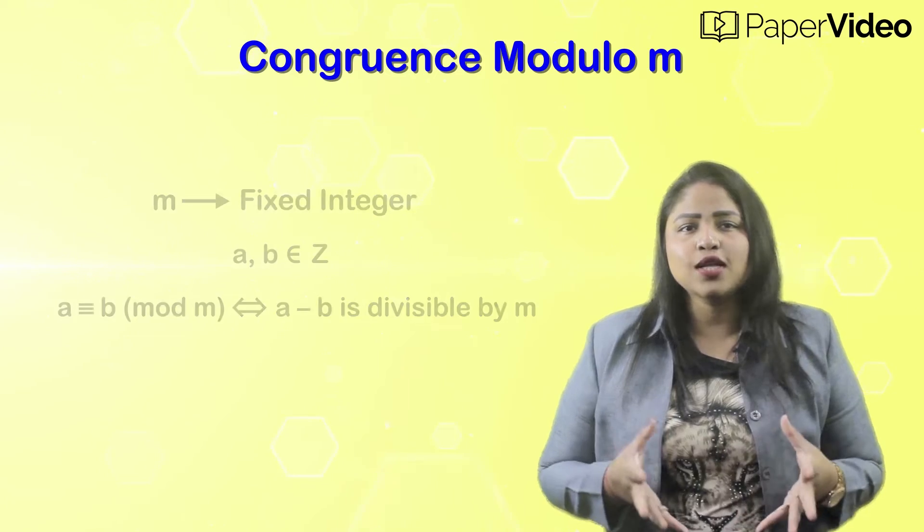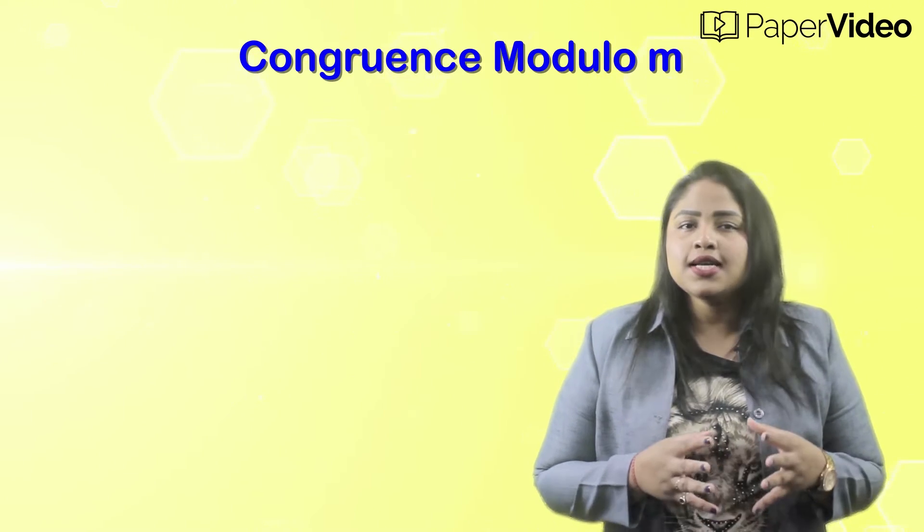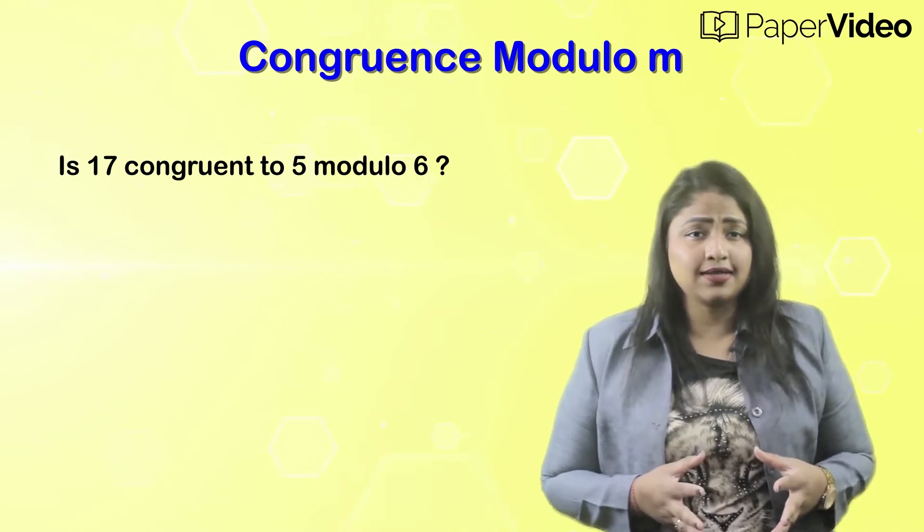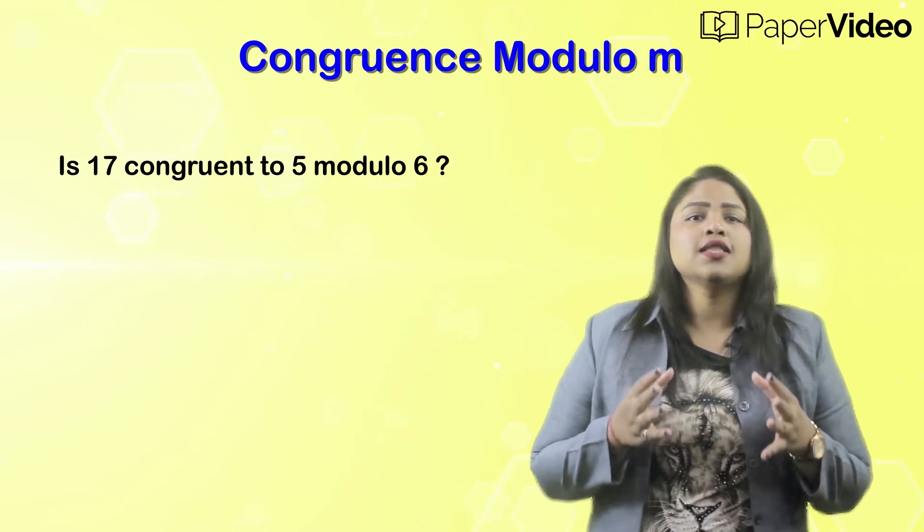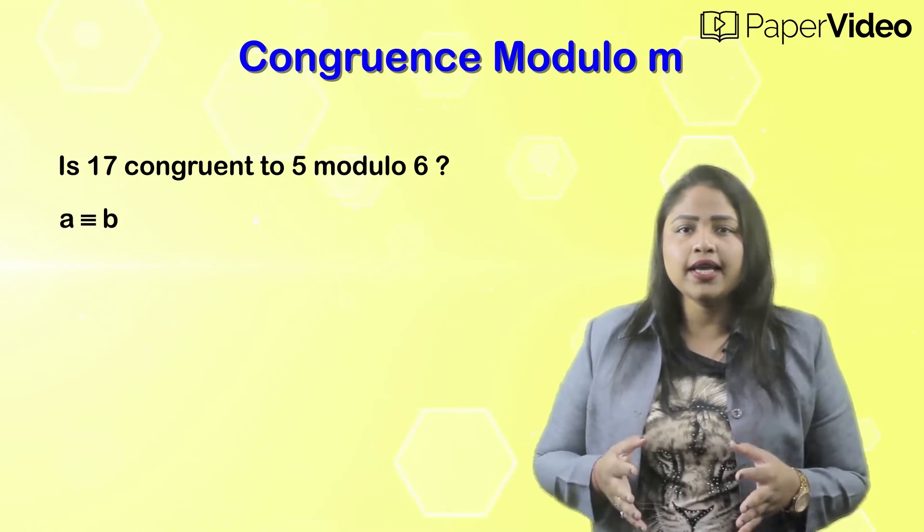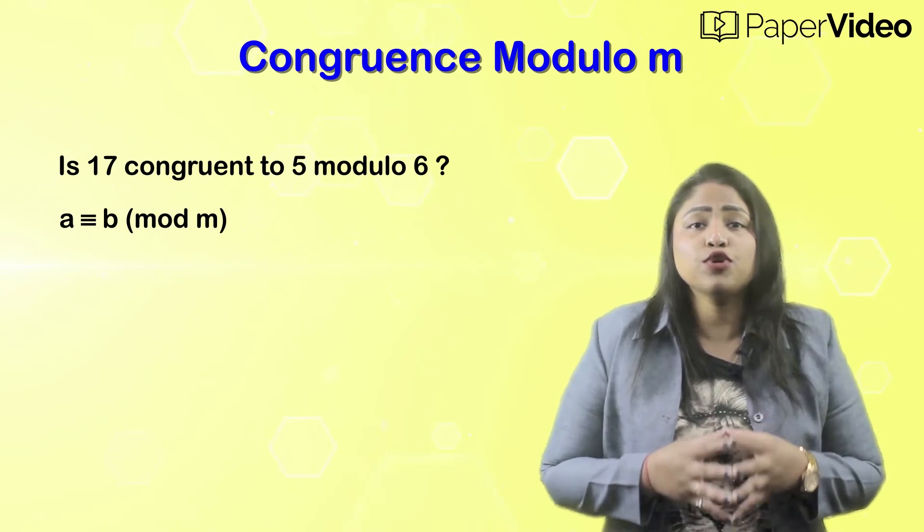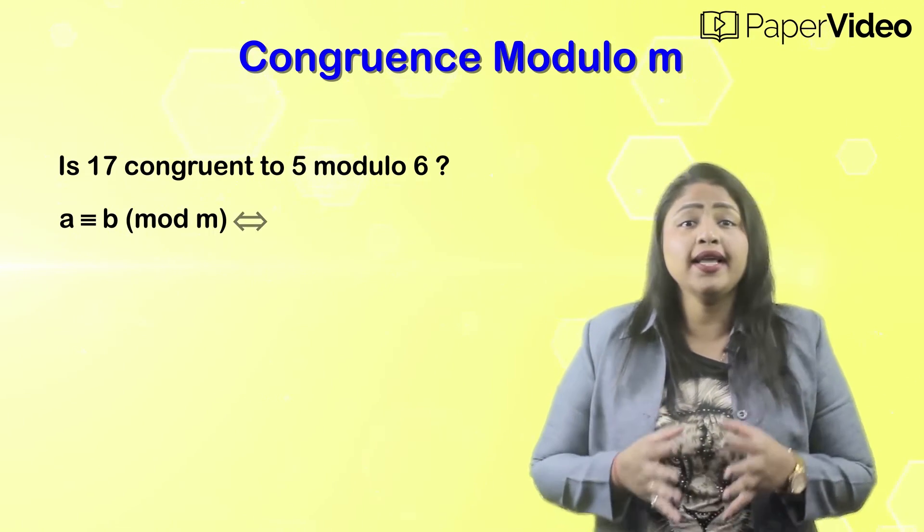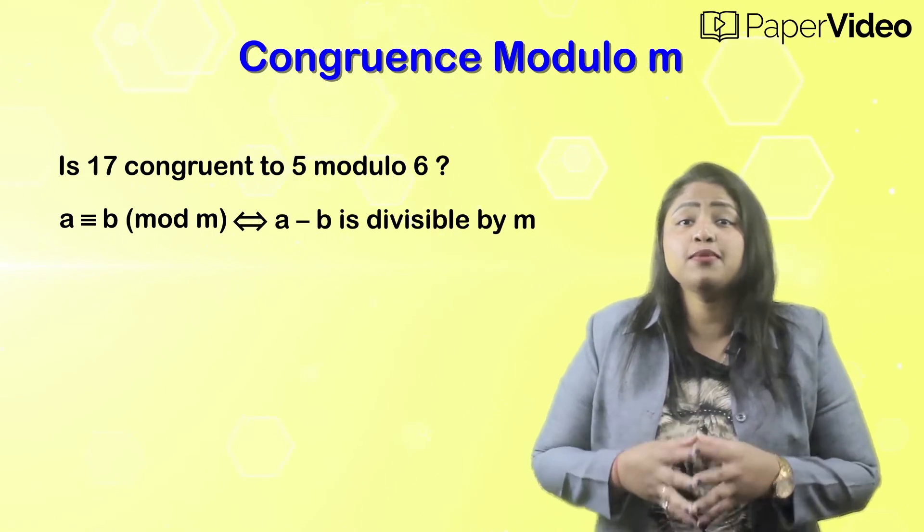Let us understand this concept with the help of an example. Is 17 congruent to 5 modulo 6? As per the definition, integers A and B are said to be congruent modulo M if and only if A minus B is divisible by M.